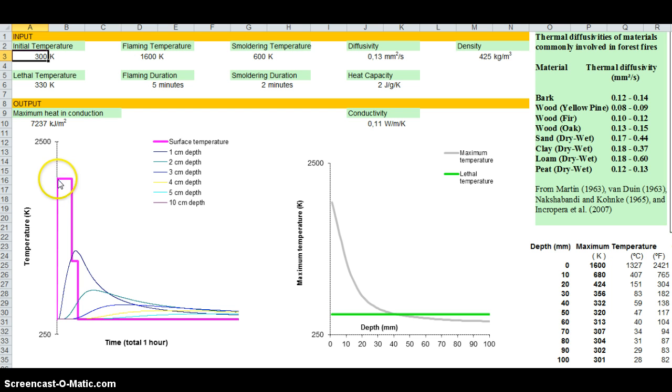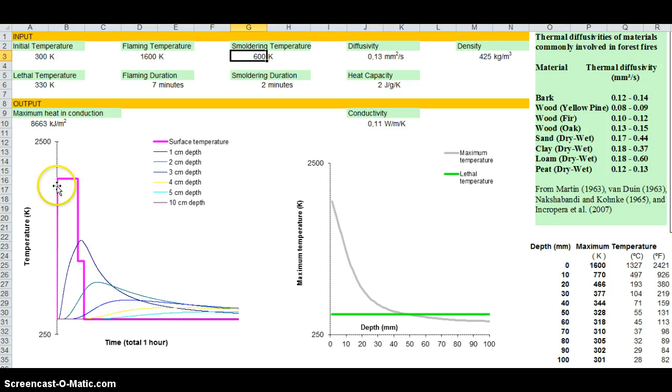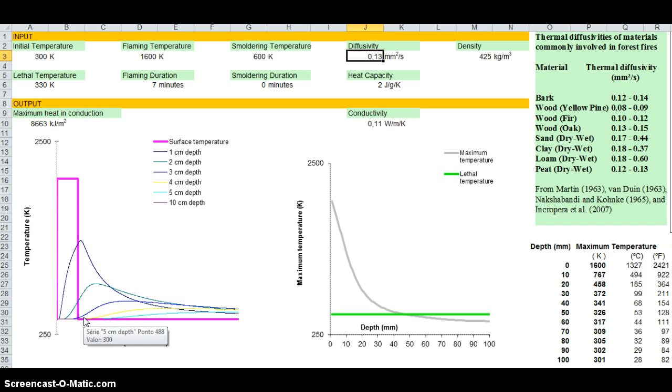And here you can see how this is described in this graph where we have the temperature of the flaming phase and the temperature of the smoldering phase and the corresponding duration. So if you change duration from 5 minutes to 7 minutes then you'll see this change in the duration of this phase. And if you change from 2 minutes to 0 essentially you are saying that this fire smoldering is not important and the whole thing is during the flame.